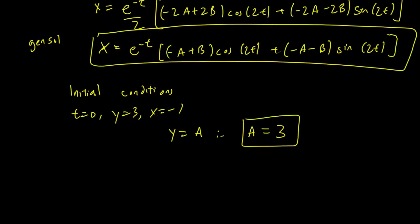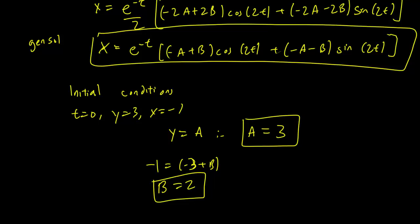Plugging in the second initial condition, x equals negative 1 at t equals 0: the e^{-t} becomes 1, cosine 0 is 1, and sine 0 disappears. So we get negative a plus b equals negative 1, which means negative 3 plus b equals negative 1, so b equals 2. We plug those values into our general solutions and we're done.